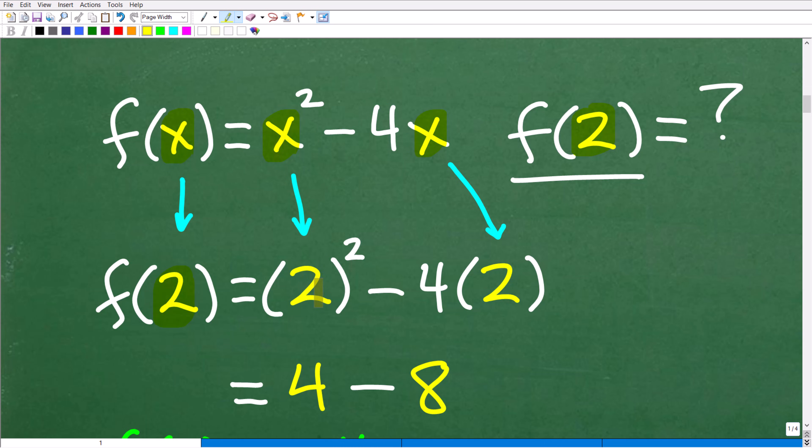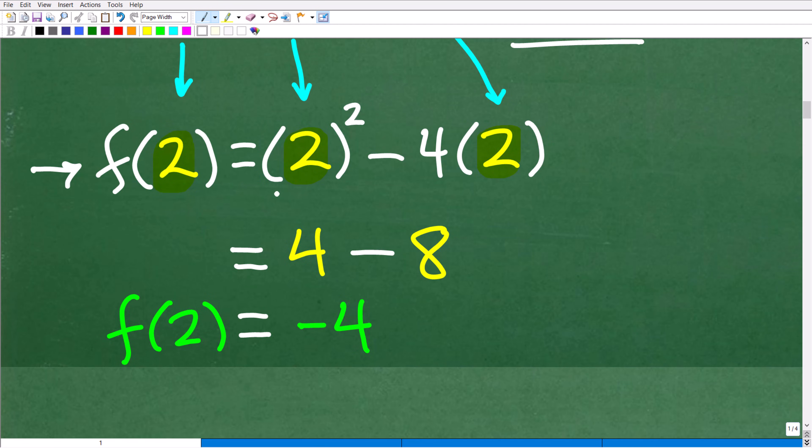Wherever we see an x, we're going to plug in a 2. And by the way, a little note: when you plug in or substitute values into a function, always use parentheses. So f(2) for this particular function is equal to (2)² - 4(2), and now we can do the math. 2² is 4 minus 4 times 2 is 8, so 4 - 8 is negative 4. So f(2) = -4.